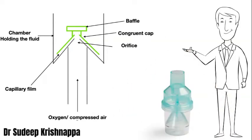Oxygen is fed from the tubing at the bottom; the pressure drop happens at the orifice, generating subatmospheric pressure. Instead of a capillary tube, we have a cap highlighted in green. The shape of it is congruent to the base and the orifice — it sits on top, providing a very small gap between the two which acts like a capillary tube. The fluid in the chamber is continuously suctioned up through this small gap towards the orifice, where the jet shatters the liquid against the baffle internally to generate the aerosol and mist, which subsequently moves on towards the patient.